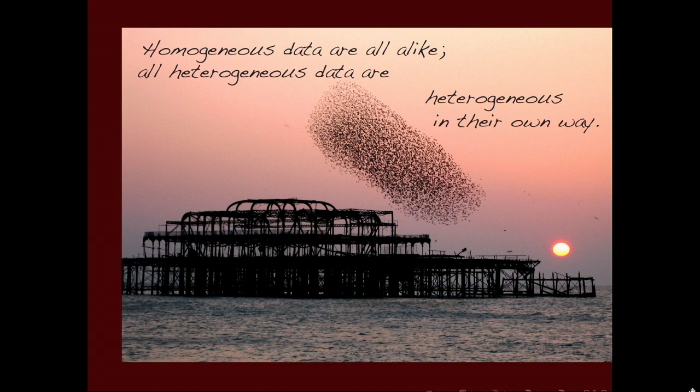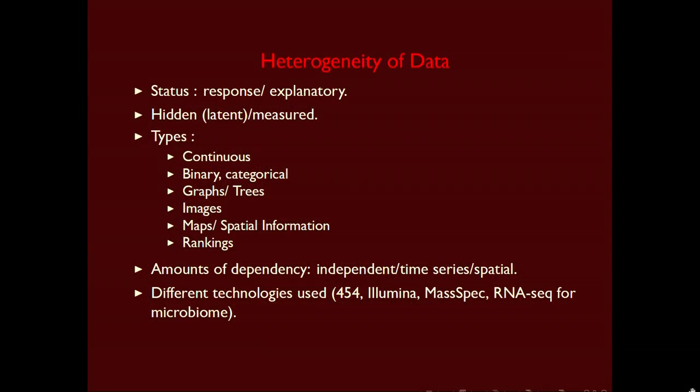Homogeneous data are all alike, and all heterogeneous data are heterogeneous in their own way. The heterogeneity of the data that we have here is at many different levels. We have the status of some of the variables — for instance, I'll talk at the end about a study we did on preterm birth, where the time of pregnancy was the main response variable we were trying to explain. Sometimes it's very simple variables like states of health and illness in IBS. Other times we don't have a clear response variable, which gives rise to methods where we try to find what's hidden — either hidden gradients or hidden clustering variables. Those are latent variables that we have to tease out from the data, and that's harder.